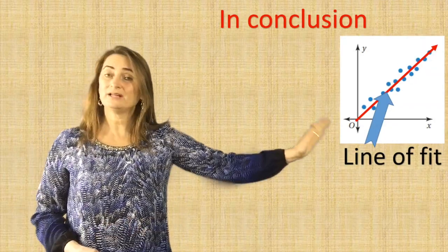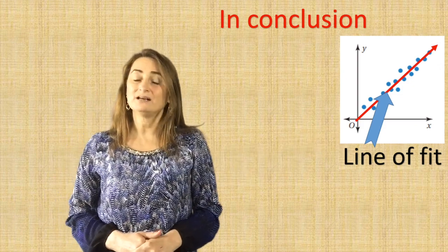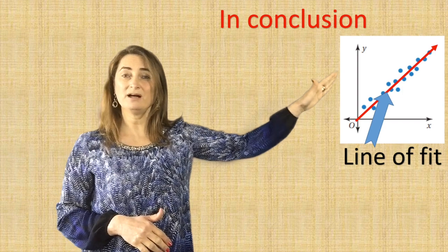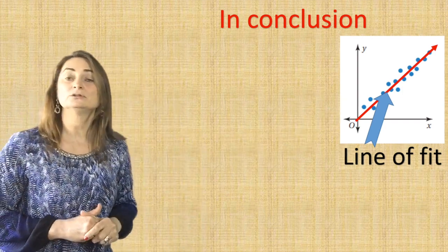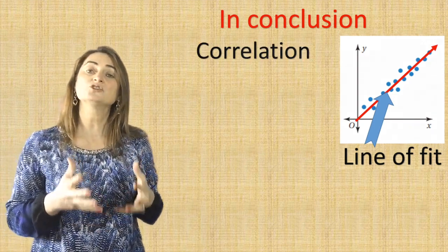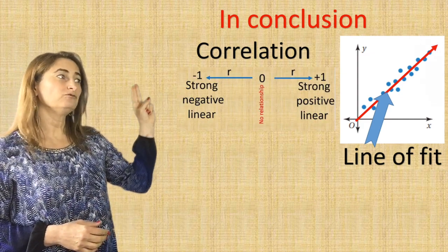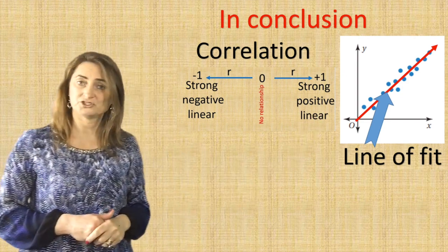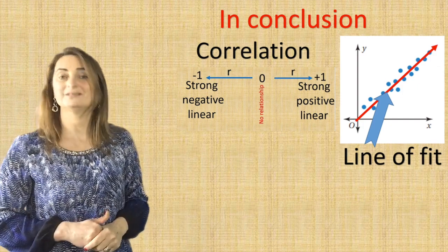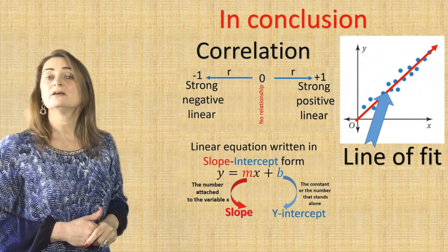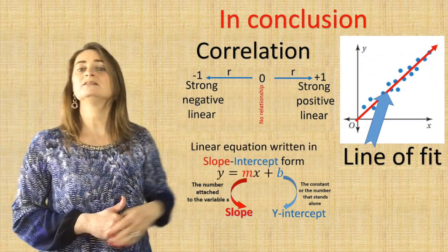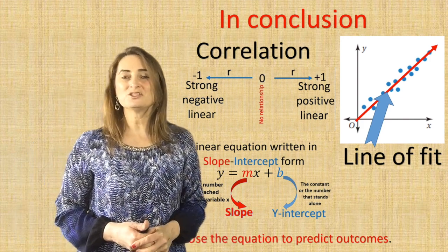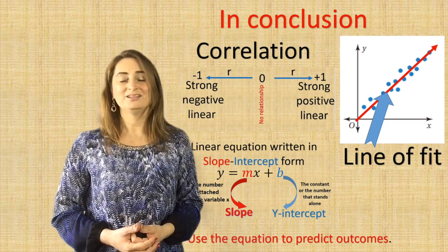In conclusion, a line of best fit is the line that best describes the data on a scatterplot — it must represent as many dots as possible, with some above and some on the line. We talked about the correlation coefficient, which shows how strong the relationship is: close to negative one means strong negative linear, close to positive one means strong positive linear, and equal to zero means no relationship. We also wrote linear equations in slope-intercept form to represent the situation and used the equation to predict future outcomes. That's it for today's lesson — thank you so much for subscribing, liking, and commenting. You guys have a great day, see you next time.